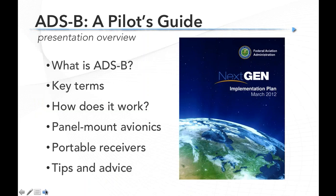Here's a quick overview of the presentation tonight. We're going to start with a look at what ADS-B is really all about — it's important to understand what it is and, just as importantly, what it is not. Then we'll cover some key terms to demystify the jargon and acronyms. We'll talk about how it works, both the weather and traffic side, and the ground stations. Then we'll see ADS-B in action in the cockpit — panel mount avionics and portable receivers — and close with tips and advice.